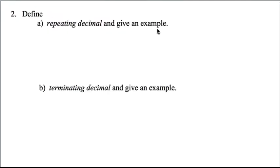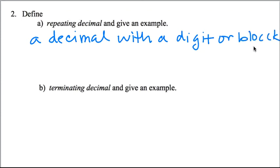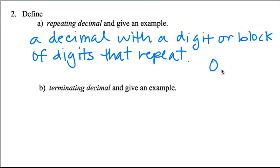Number two, define a repeating decimal. Give an example. So we have a decimal with a digit or block of digits that repeat. An example, any decimal where you've got this repeating bar across the top, or if you wanted to write it a little bit differently, you could show the pattern with the three dots at the end.